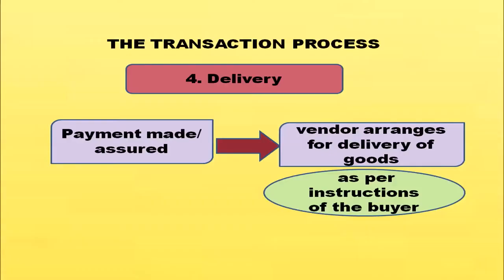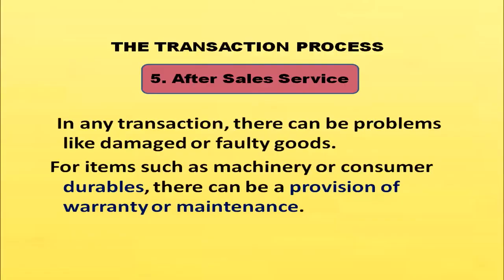The next process in the transaction is delivery. Once payment is assured by the seller, the vendor arranges for delivery of goods as per the buyer's instructions. The fifth transaction process is after-sale service. In any transaction there can be problems like damaged or faulty goods. For items such as machinery and consumer durables, there can be a provision of warranty or maintenance.